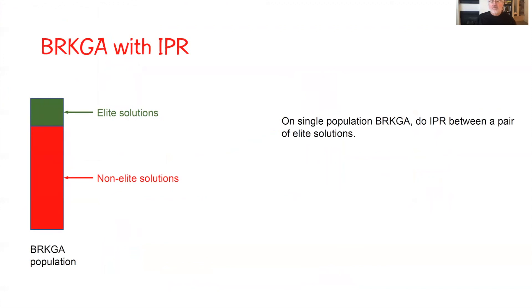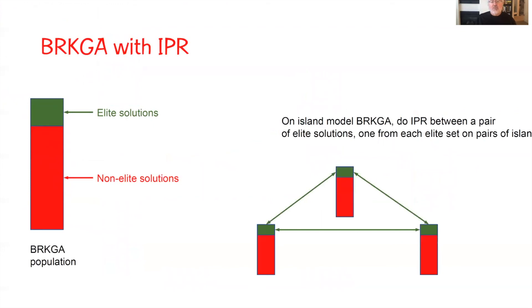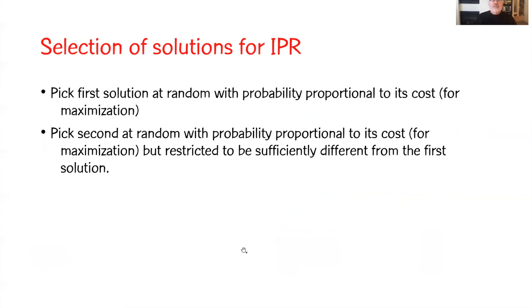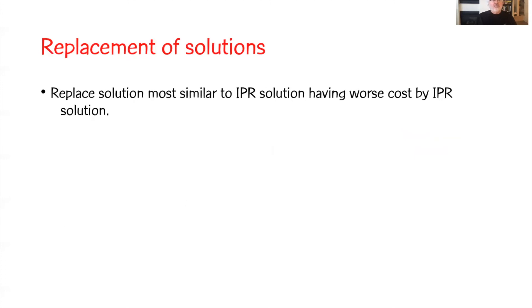How do we incorporate this within a BRKGA? If running a single-population BRKGA, we do implicit path relinking between a pair of elite solutions. If running an island model with several populations simultaneously, we do path relinking between a pair of elite solutions, one from each elite set on pairs of islands — island 1 with island 2, island 2 with island 3, island 1 with island 3. We pick the first solution at random with probability proportional to its cost, and pick a second at random restricted to be sufficiently different from the first. We replace the solution most similar to the path-relinking solution with worse cost.